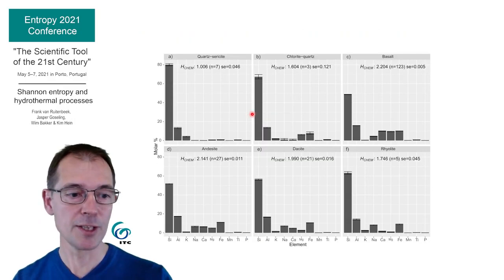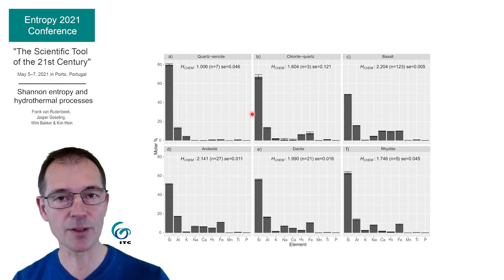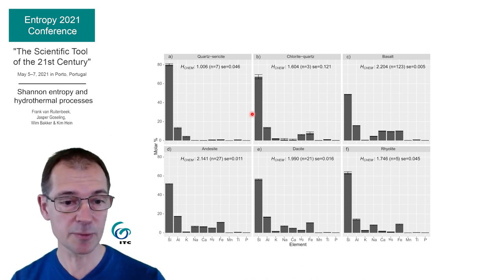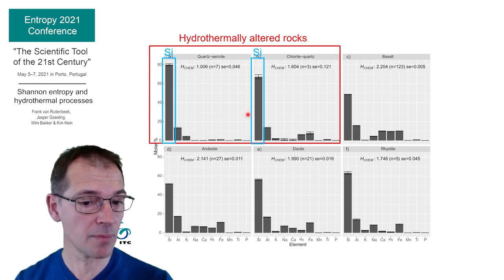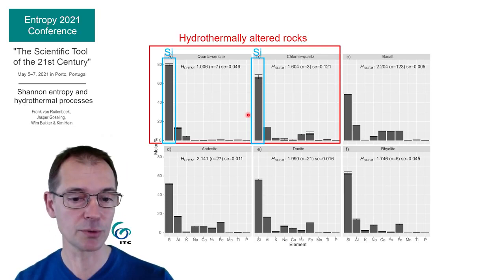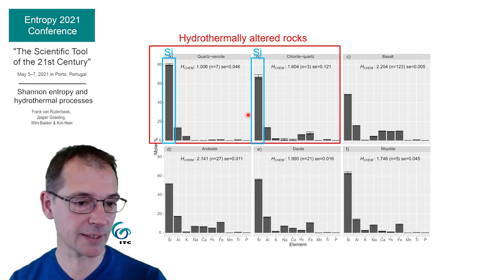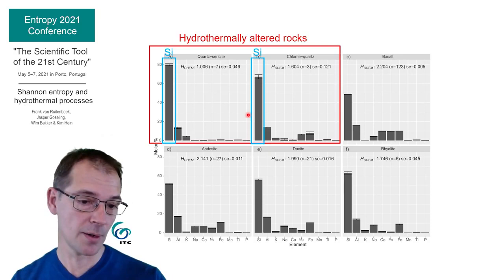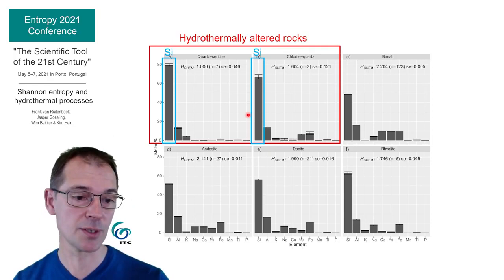In these plots of the mean chemical composition of the different groups of rocks in this study, one can see why the hydrothermally altered rocks have lower chemical Shannon entropy values. Silicium contents are higher, and sodium, calcium, magnesium, and iron contents are generally lower than in the unaltered groups of rocks. The unaltered groups are represented here by basalts, andesites, dacites, and rhyolites. The alteration of the two groups of altered rocks leads to probability distribution shapes with lower Shannon entropy values.